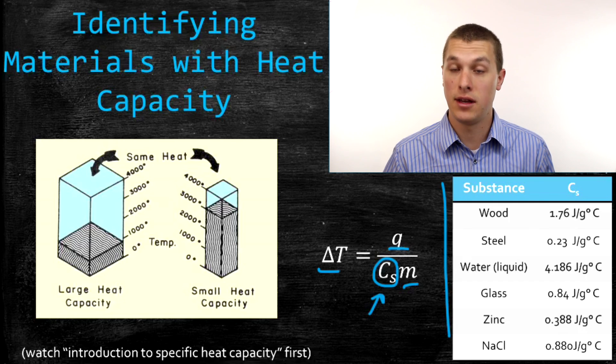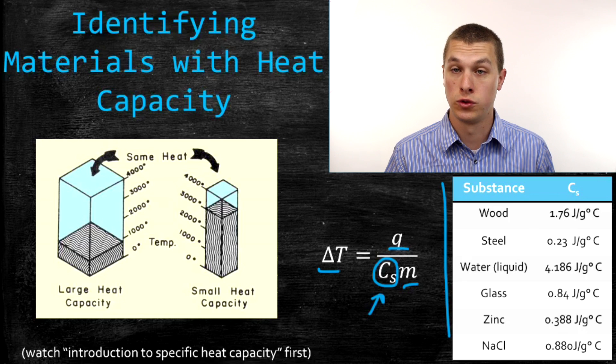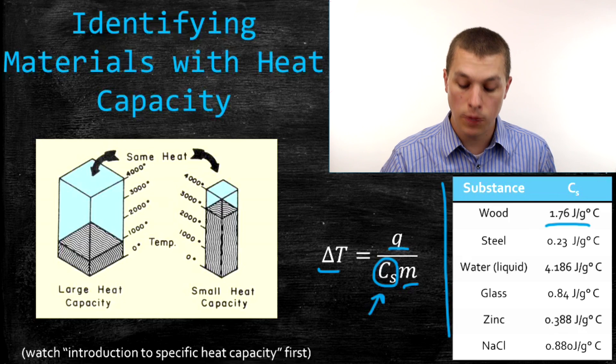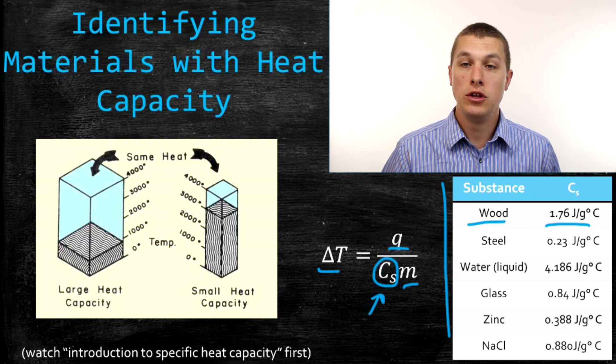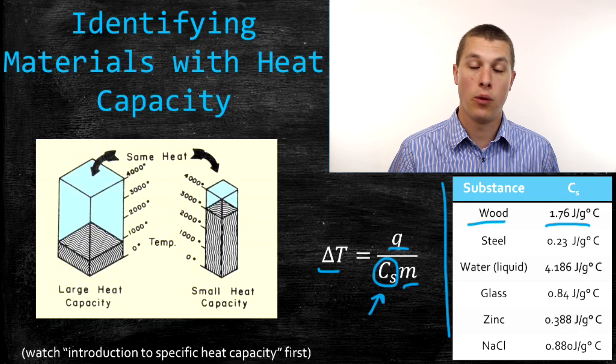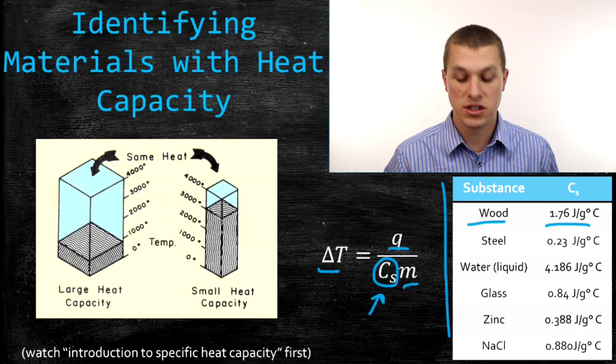Let's say we calculated the heat capacity was 1.76 joules per gram degree Celsius. We look on our list and we say, oh, there's 1.76, and that's wood. So using heat capacity in a table, you can actually identify what your material is made of if you know its change in temperature, its mass, and the heat you added.